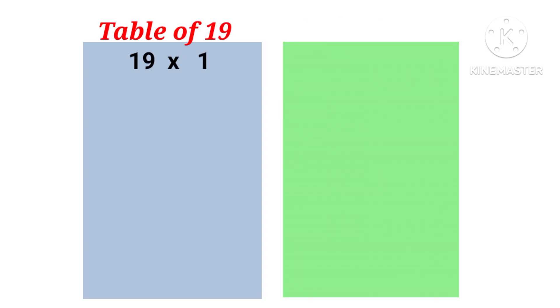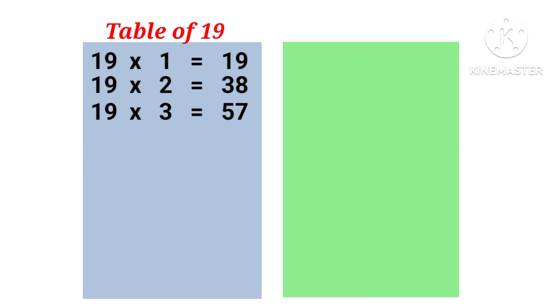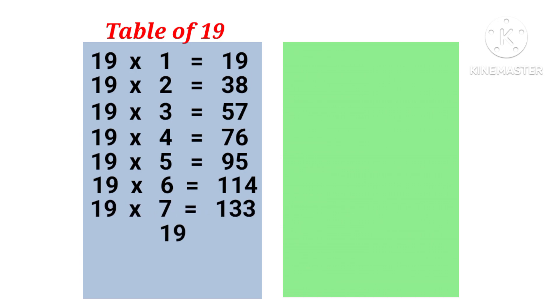19 1s are 19, 19 2s are 38, 19 3s are 57, 19 4s are 76, 19 5s are 95, 19 6s are 114, 19 7s are 133, 19 8s are 152, 19 9s are 171, 19 10s are 190.